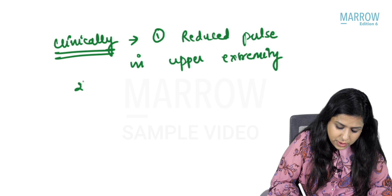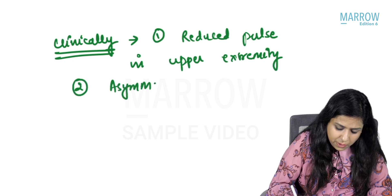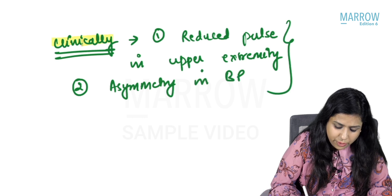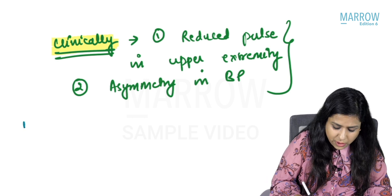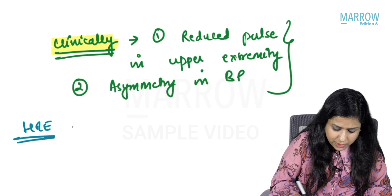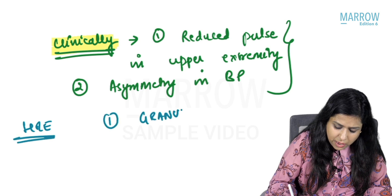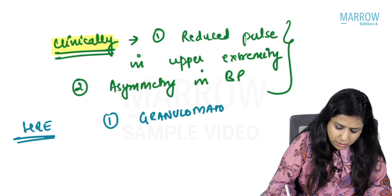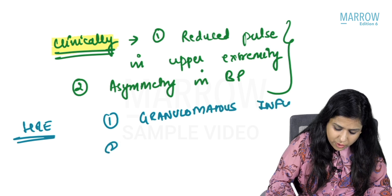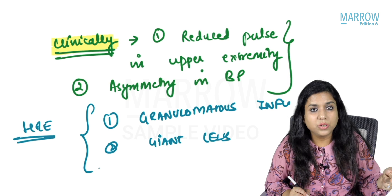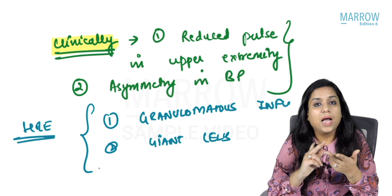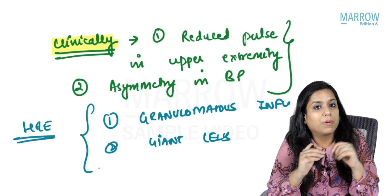Another clinical feature is asymmetry in blood pressure. On biopsy, similar to giant cell arteritis, you will see granulomatous inflammation with the presence of giant cells. So biopsy alone cannot differentiate the two — the age and clinical features are the two important differentiating points.